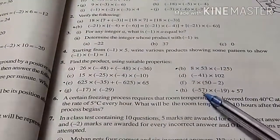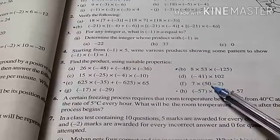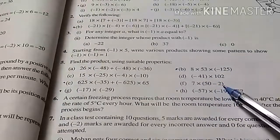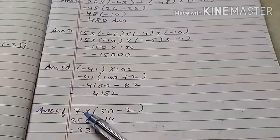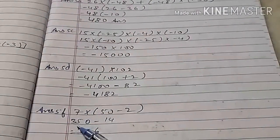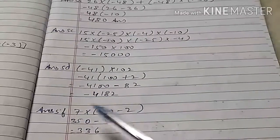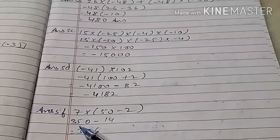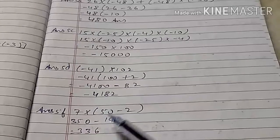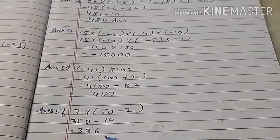Question 5F: 7 multiply bracket (50 minus 2). First we multiply 7 by 50 to get 350, then we multiply 7 by 2 to get 14. So 350 minus 14 gives 336.